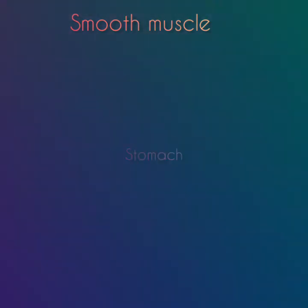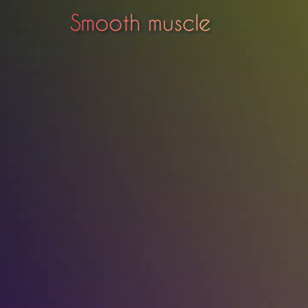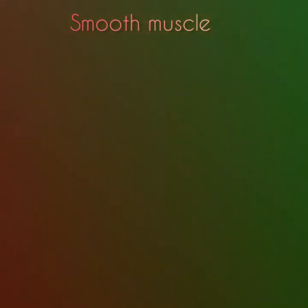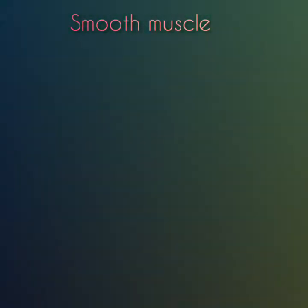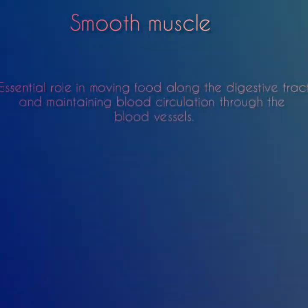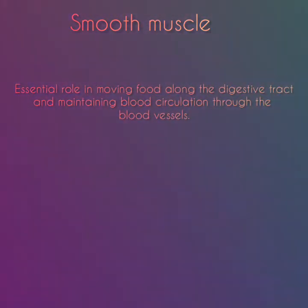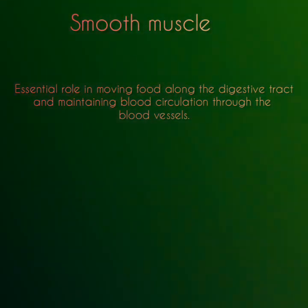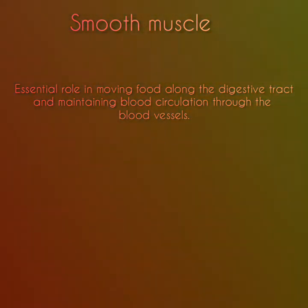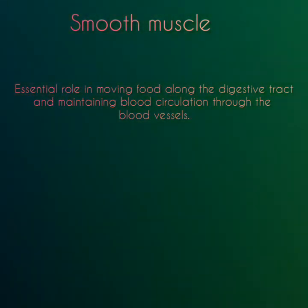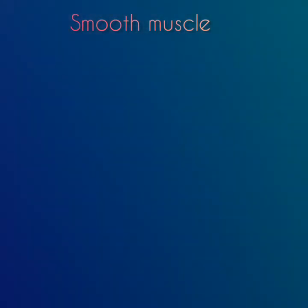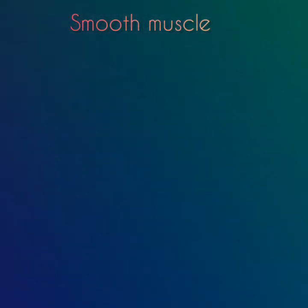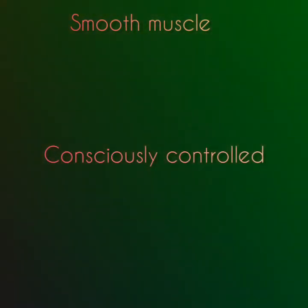Smooth muscle lines the inside of blood vessels and organs such as the stomach and is also known as visceral muscle. It is the weakest muscle but plays an essential role in moving food along the digestive tract and maintaining blood circulation through the blood vessels. The smooth muscle acts involuntarily and cannot be consciously controlled.